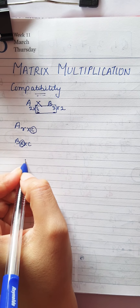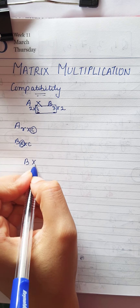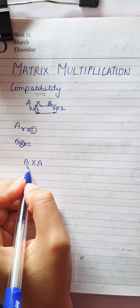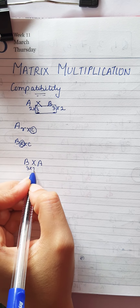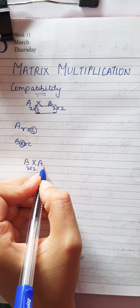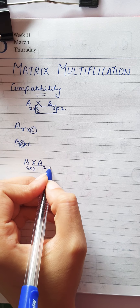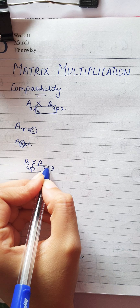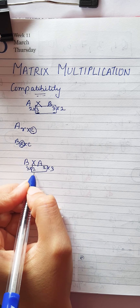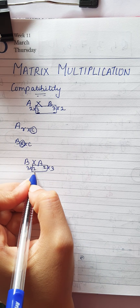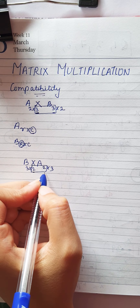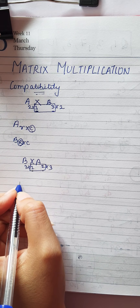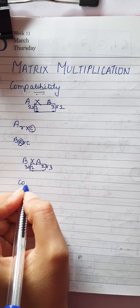Suppose if I do B×A, then the order of B was 3×2 and the order of A was 2×3. Again the columns of B and the rows of A are the same, so B×A is also possible. What I need to check is: columns of the first matrix should be equal to rows of the second.